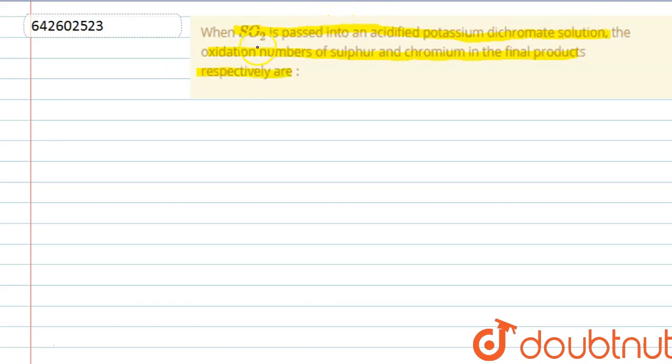Now, we are given the reaction when SO2 is passed into acidified potassium dichromate. So the reaction will take place as SO2 plus K2Cr2O7 plus 3H2SO4, because this is acidified it means acid is present, gives rise to K2SO4 plus Cr2(SO4)3 plus 3H2O.